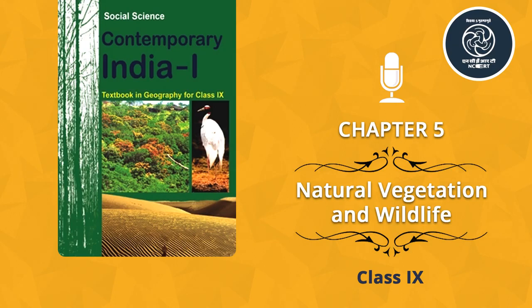Climate and Temperature: The character and extent of vegetation are mainly determined by temperature along with humidity in the air, precipitation and soil. On the slopes of the Himalayas and the hills of the peninsula above the height of 915 meters, the fall in temperature affects the types of vegetation and its growth, and changes it from tropical to subtropical, temperate and alpine vegetation.